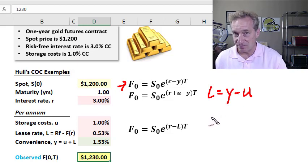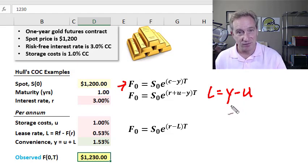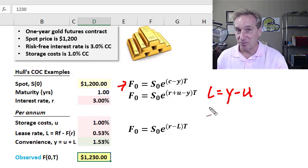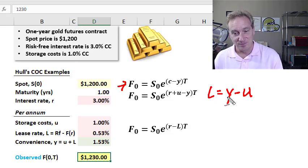So you're giving that up. So that's something you would charge, but you're saving the storage cost. You don't need to store it while you're lending it. So the theoretical lease rate, as mentioned by McDonald, is the difference between the convenience and the storage cost.